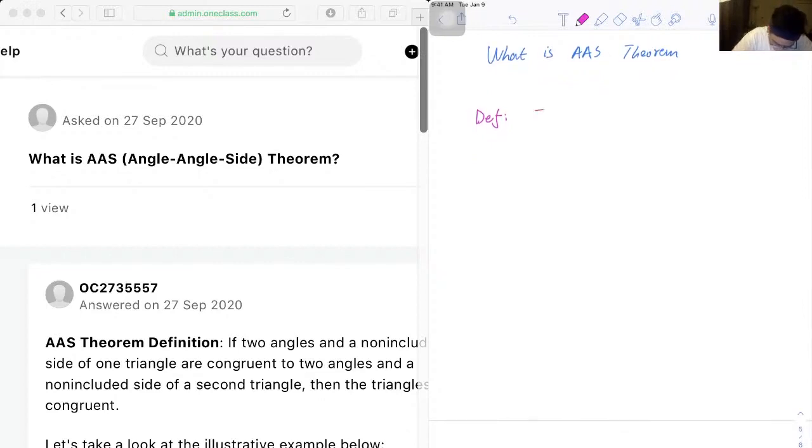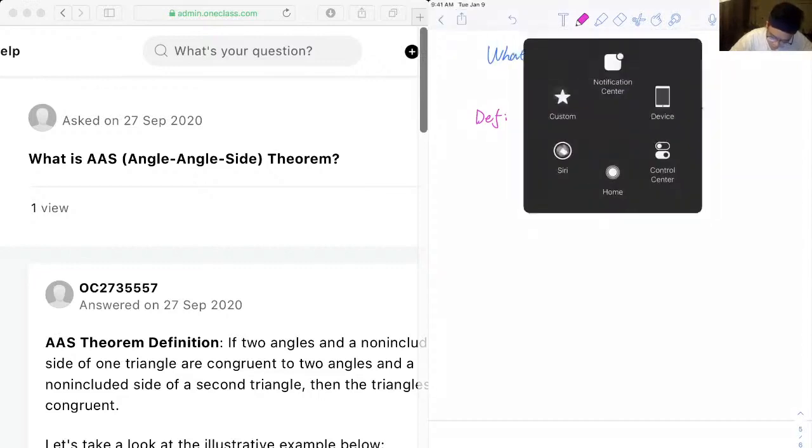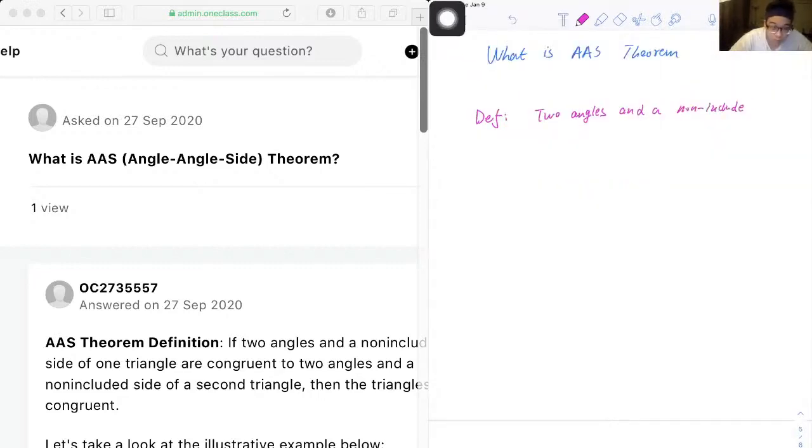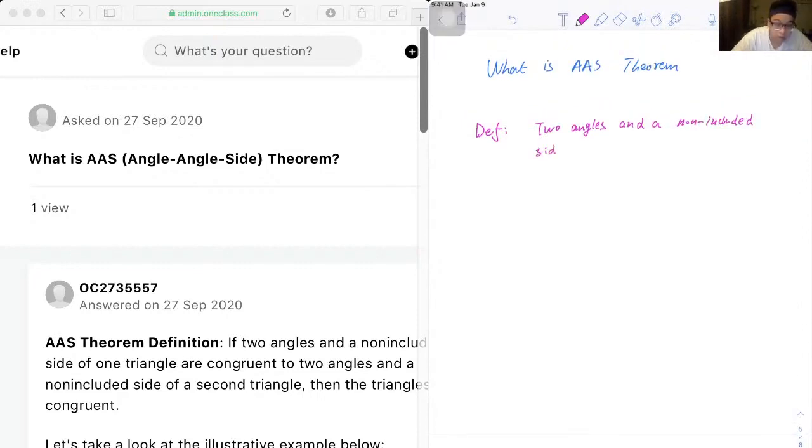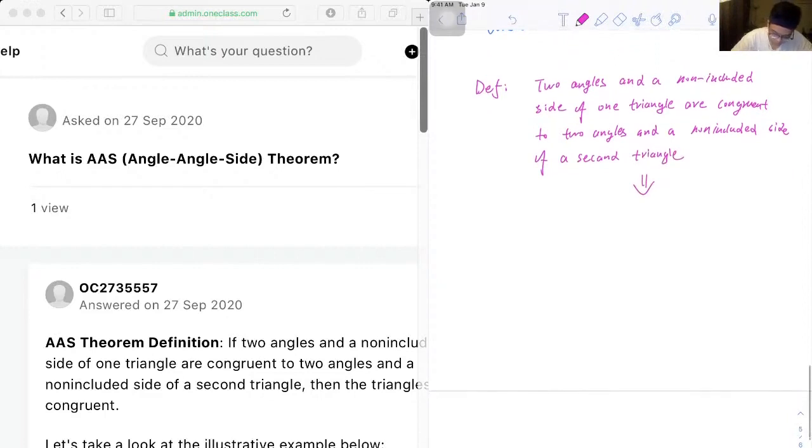If two angles and a non-included side of one triangle are congruent to two angles and a non-included side of a second triangle, then we can conclude that the triangles are congruent.